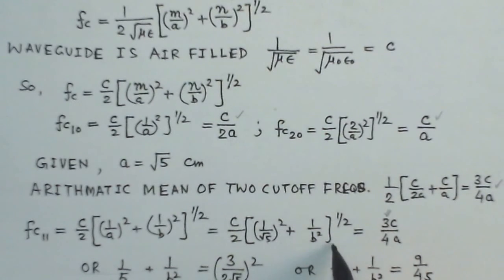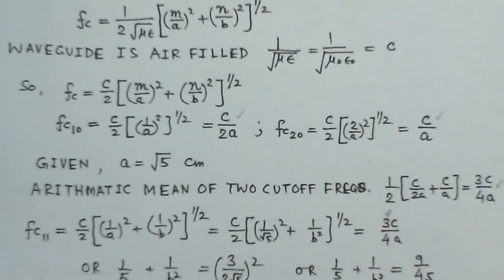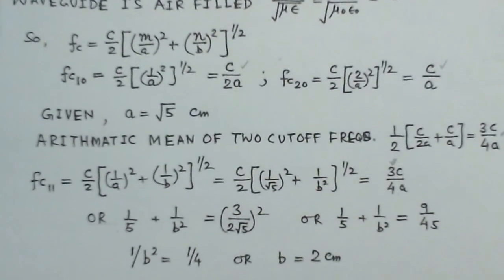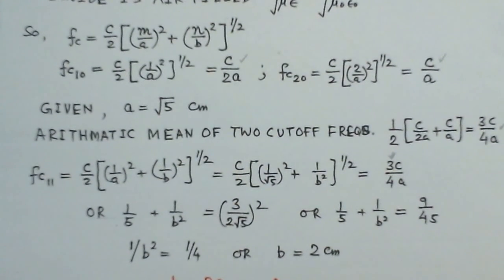Now, when we equate this, this simplifies to 1 over 5 plus 1 over B squared equals 3 over 2 root 5 whole squared or 1 by 5 plus 1 over B squared equals 9 over 20. So, if you simplify this equation for B, you find the value for B to be 2 centimeters.